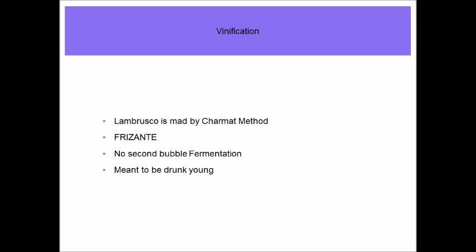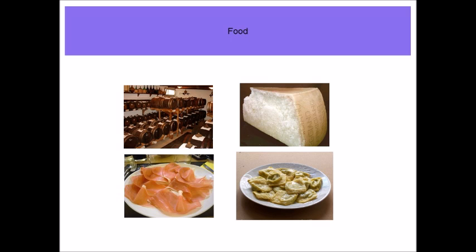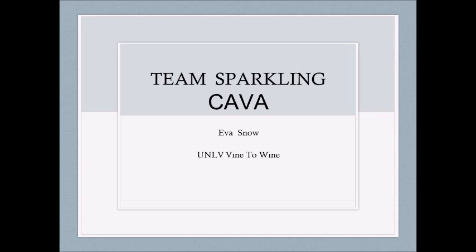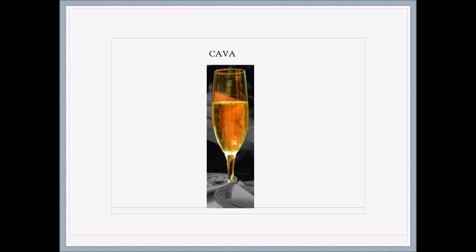Viticulture of Priorat: extremely old vines are the norm; vines planted on very steep slopes; yields are very low. Vinification: loads of extraction — wines are high in body and alcohol.